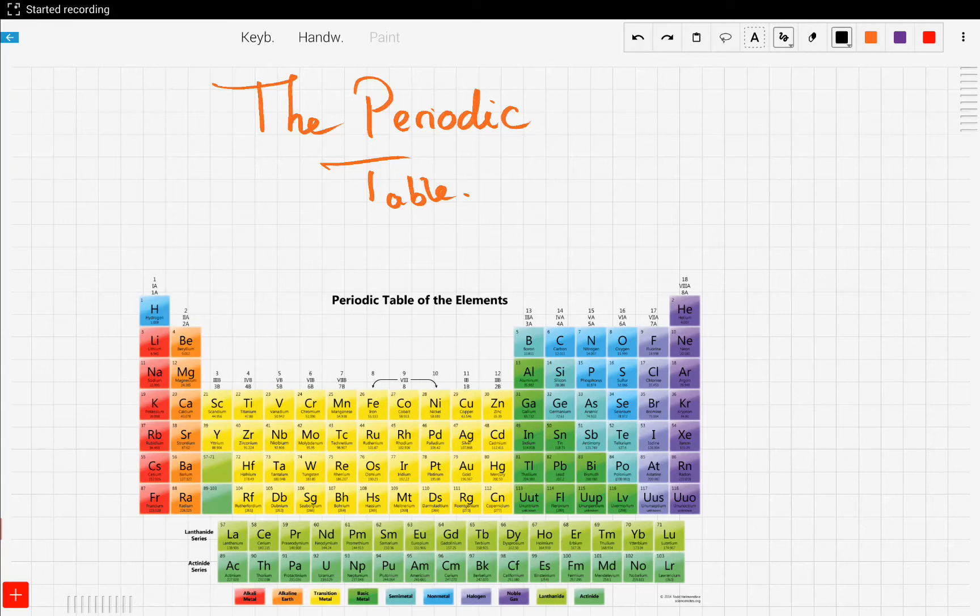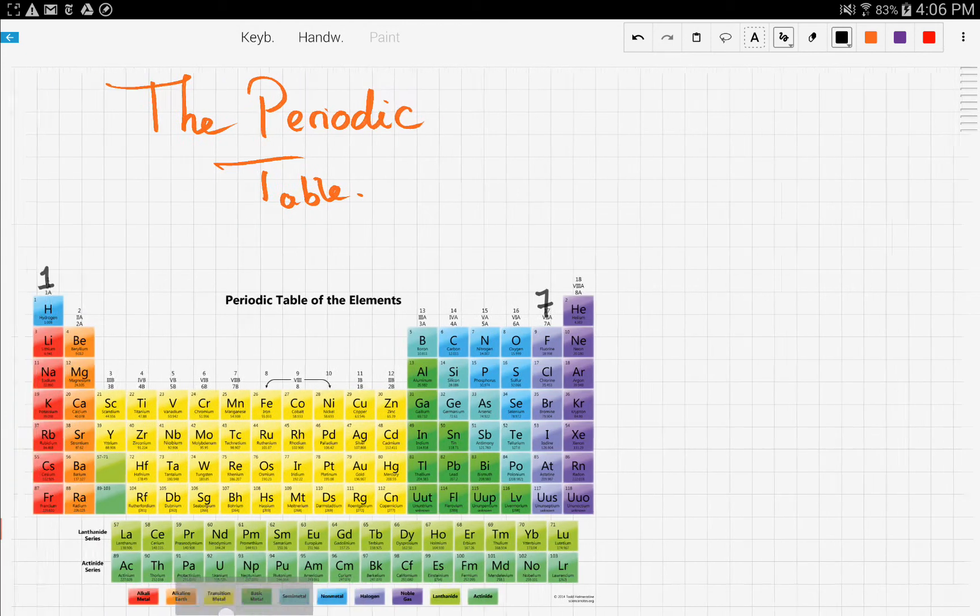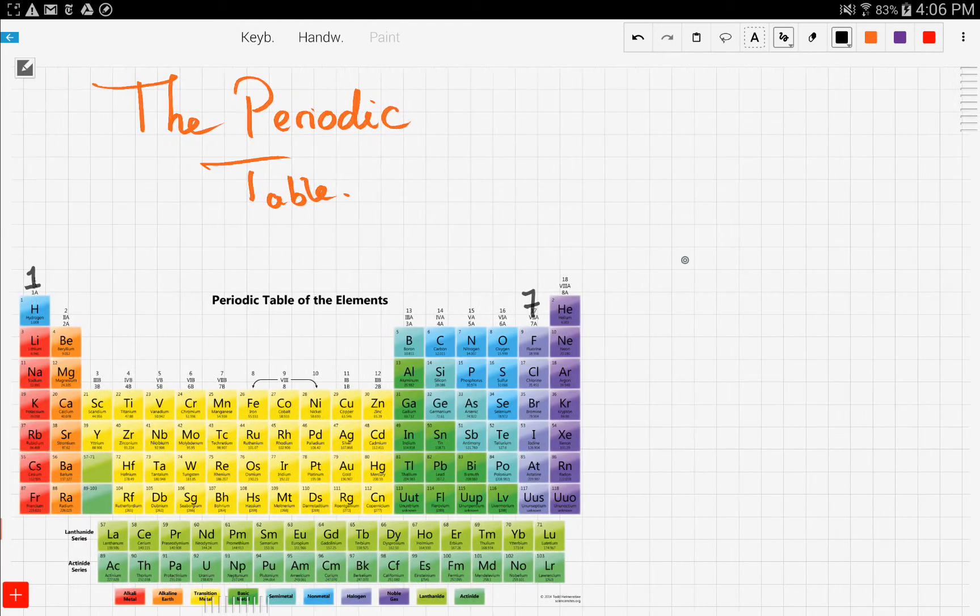So let's continue our discussion of our beloved periodic table. In the previous video we talked about the first group, which was the group for alkali metals. Now let's talk about group 7, and group 7 is also known as the group for halogens.